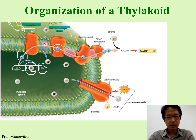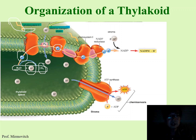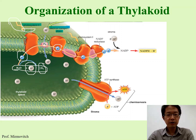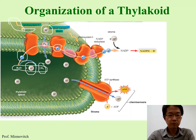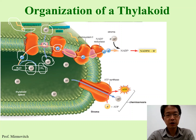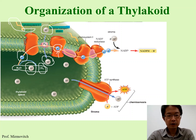Photosystem 2 passes this high-energy electron to the electron transport chain. The electron transport chain receives the high-energy electron and uses the energy from that energized electron to do active transport — pumping hydrogen ions from the stroma, which has low concentration, into the thylakoid, which has high concentration. That's why it is active transport, and active transport requires energy.